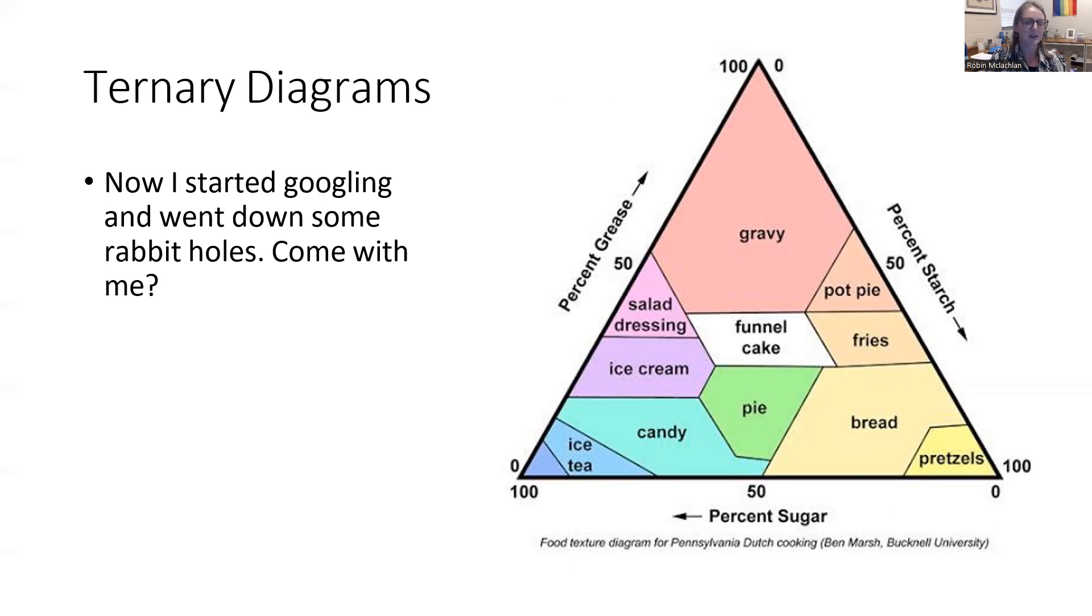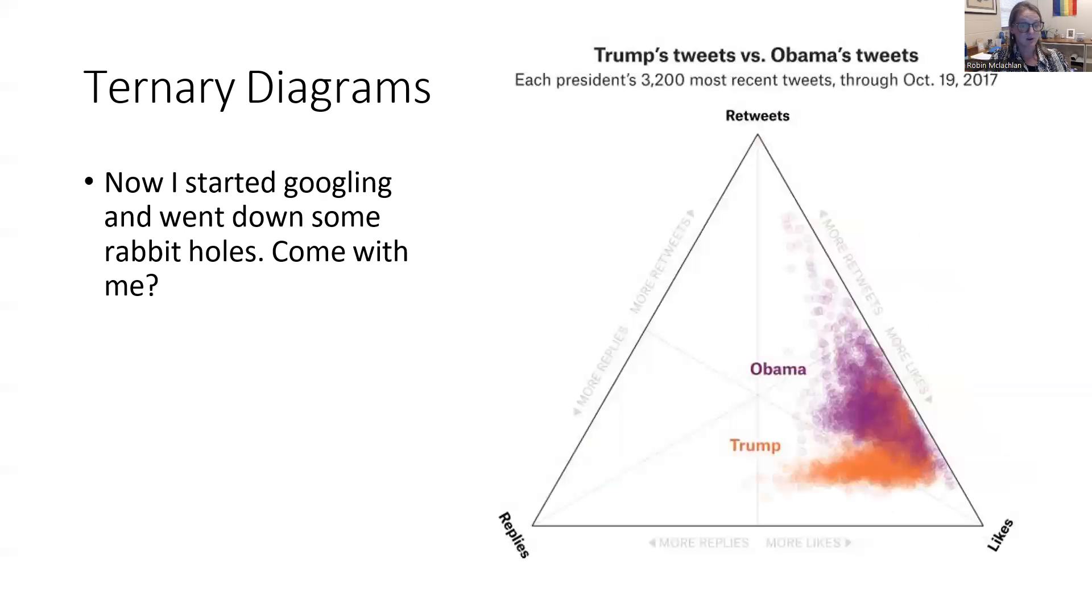And I know that those are kind of silly, but they can actually be super useful in a lot of other disciplines. So the next ones I'm going to show you are from political science, and I think these are fascinating. So here it's showing the difference between Obama and Trump and how they use Twitter, how many times they retweet versus like versus reply. And you can see that Obama does a lot of liking and retweeting, whereas Trump does a lot of liking and replying. But mostly they just like things.